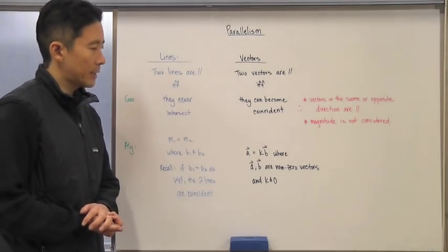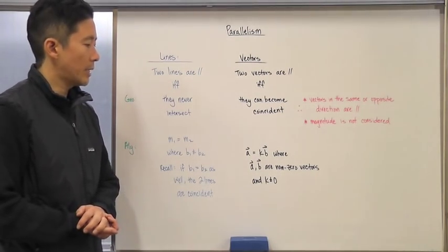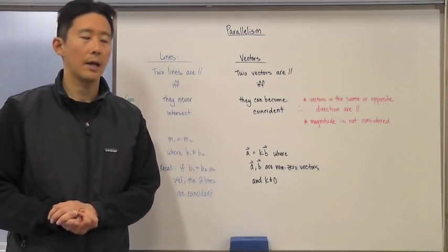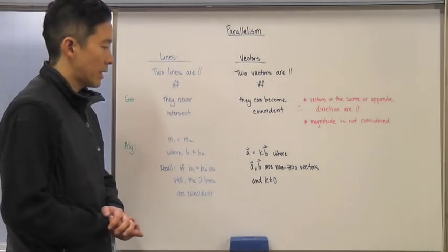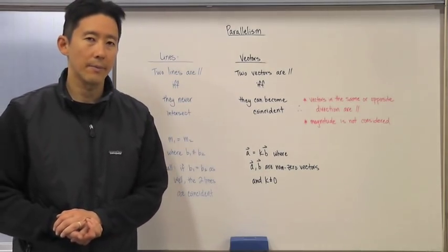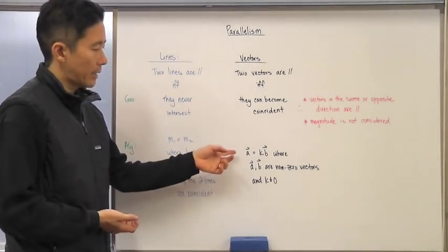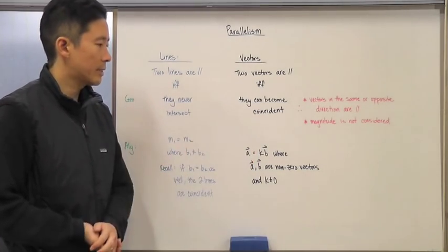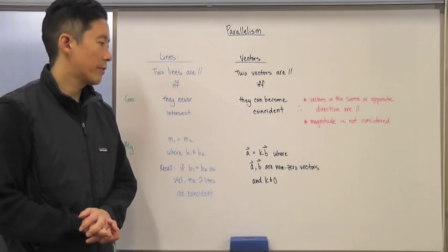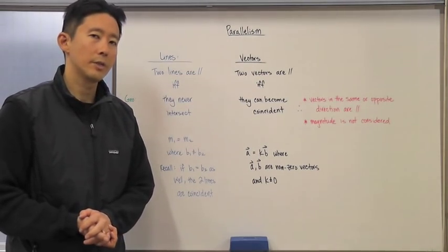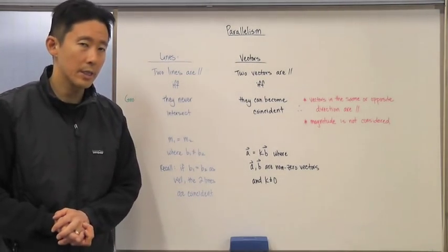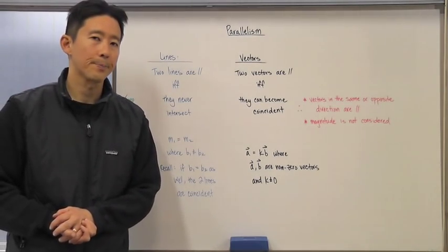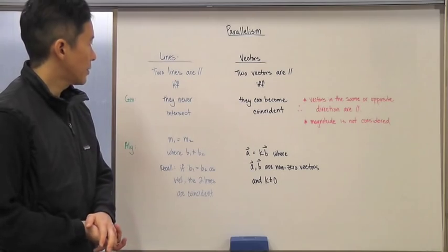The one thing we need to be careful about is that we need to make sure that a and b are not zero vectors, and we also need to make sure that k is not equal to zero. If the scalar multiplication of one vector equals another vector, then we know those two vectors are indeed coincident or can be made coincident, and therefore the two vectors are parallel.